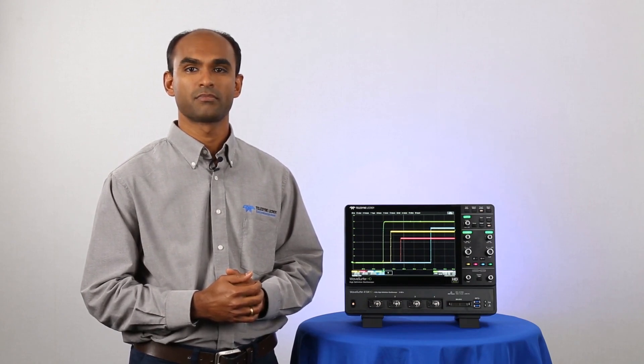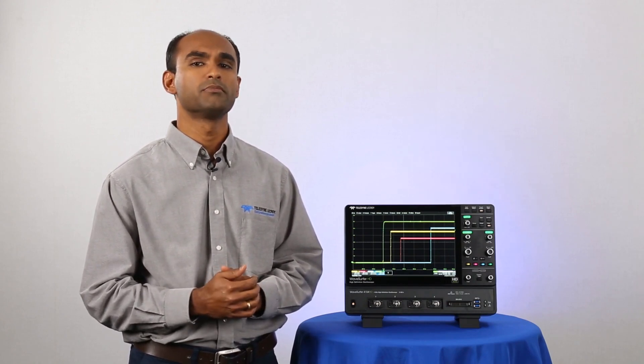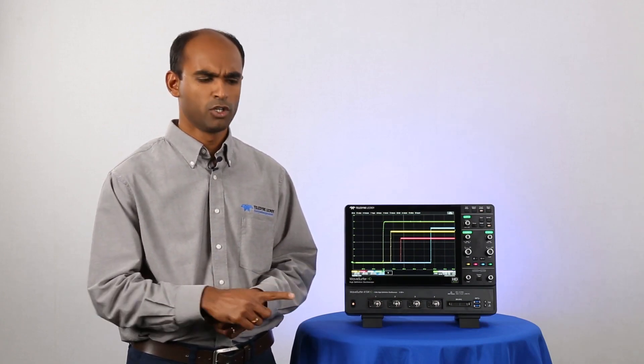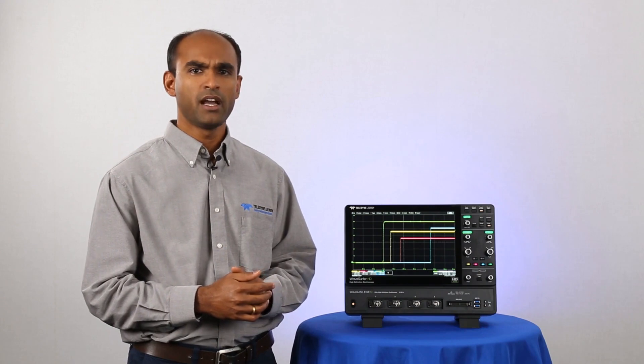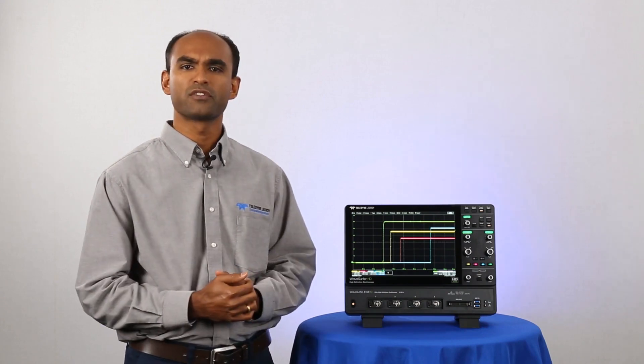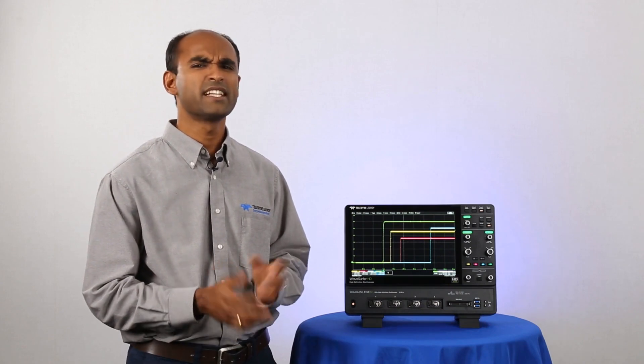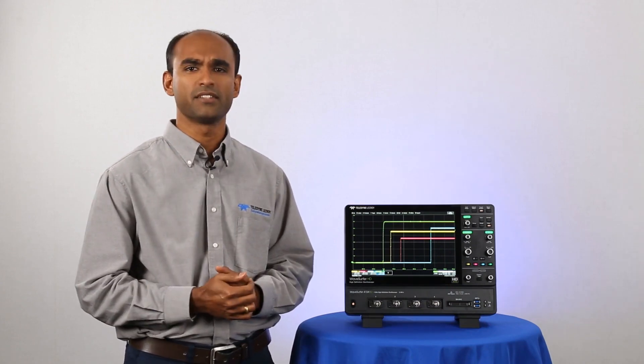How do I probe power rails? We have a specialized rail probe. It sounds expensive. You can build your own probe. You take a coaxial cable, solder down the center conductor and the shield, and terminate it straight into the 1 megaohm input of the scope. Does the scope have enough offset for that? Yes, it does. It exceeds the rail voltage, even at high sensitivities.